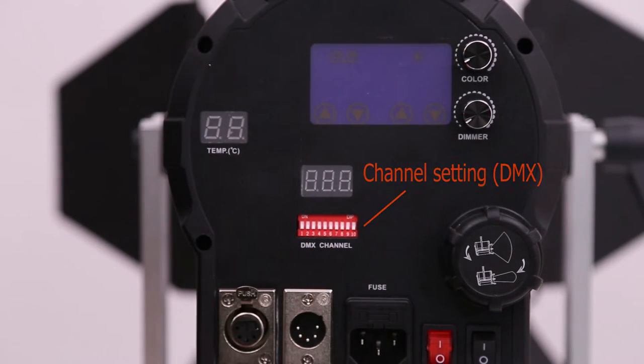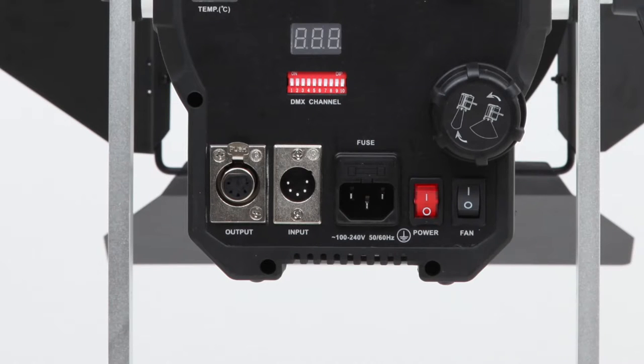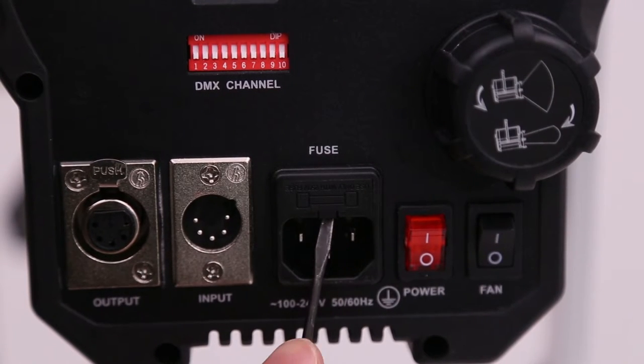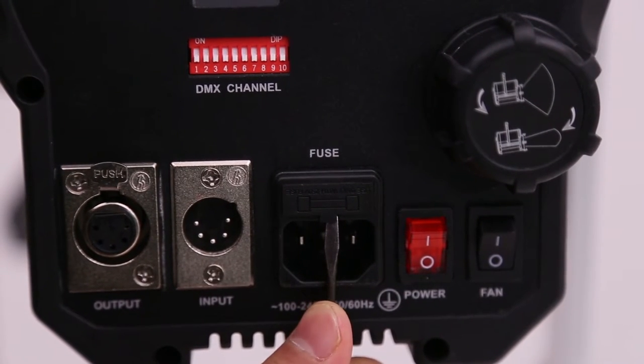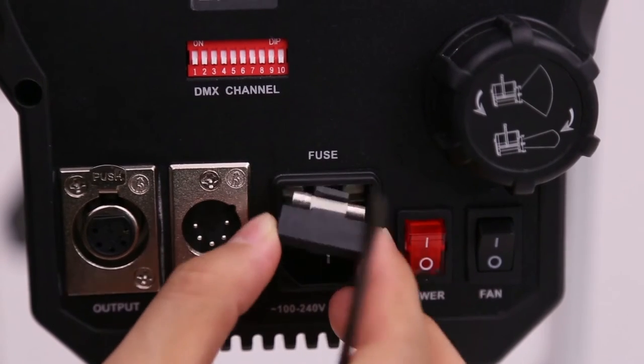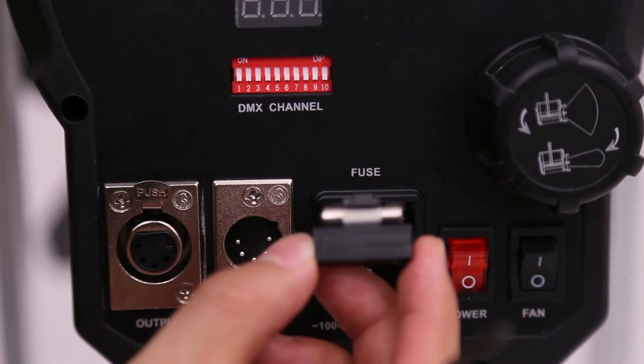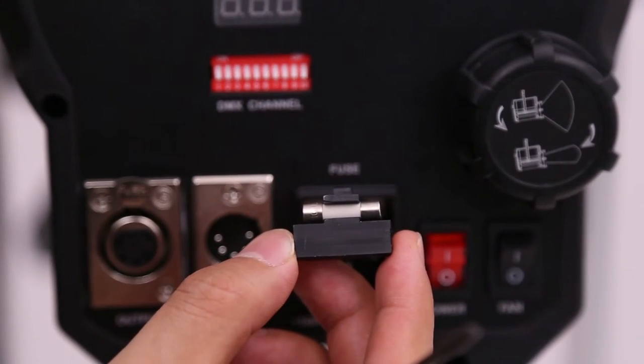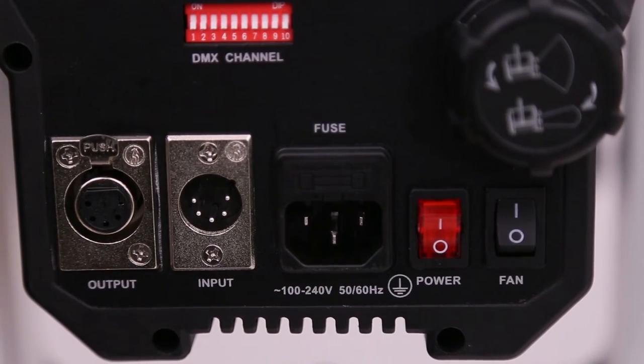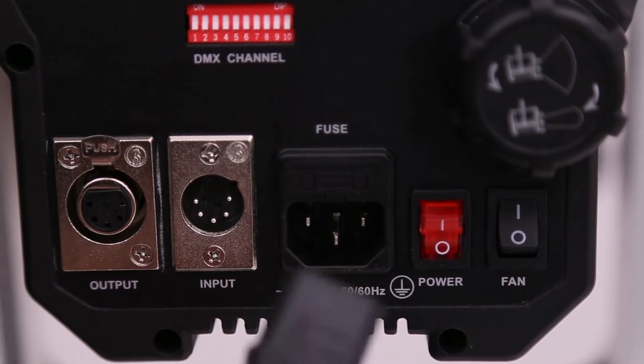The upper knob is the color temperature adjustment, the lower one is brightness adjustment. On the left is the LCD display. To the left is a small display showing temperature - when temperature reaches 70°C, power will automatically reduce by half. Below is our signal channel encoding. On the opposite side is the control signal output, this side is control signal input. Above is our fuse, which can be removed with a small screwdriver for overcurrent protection.